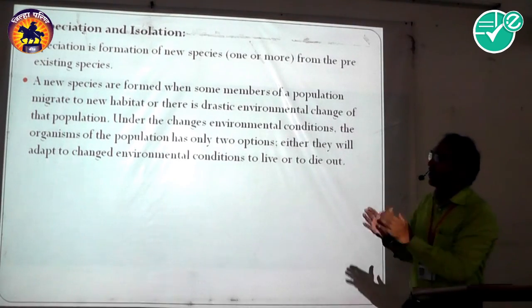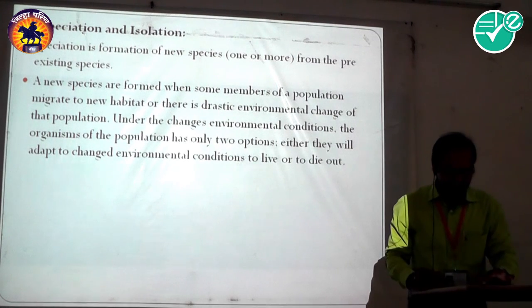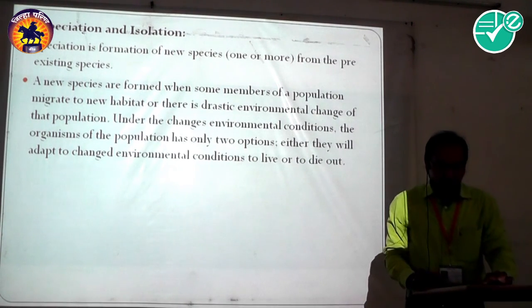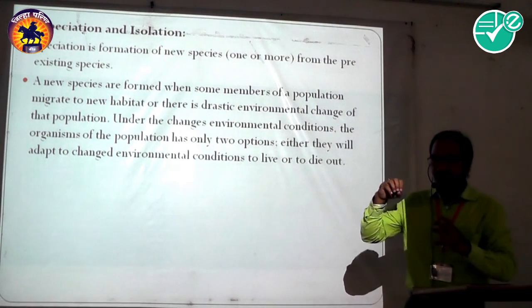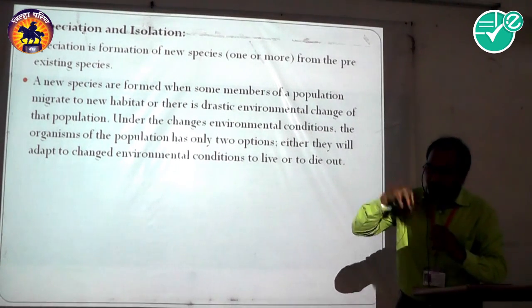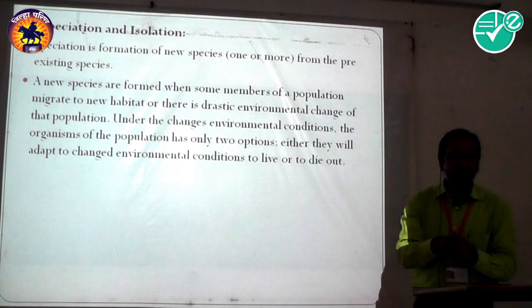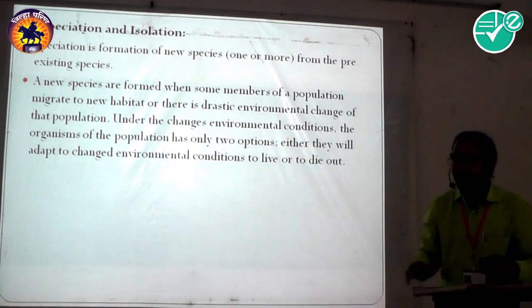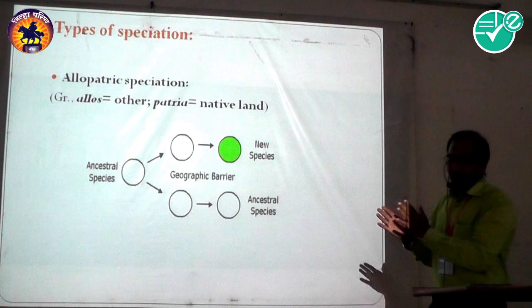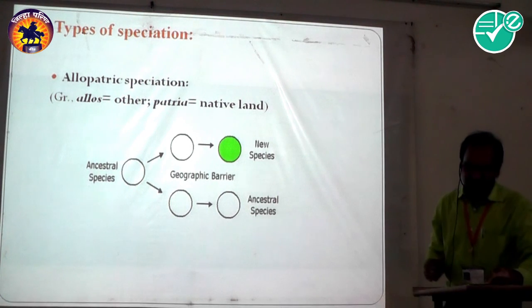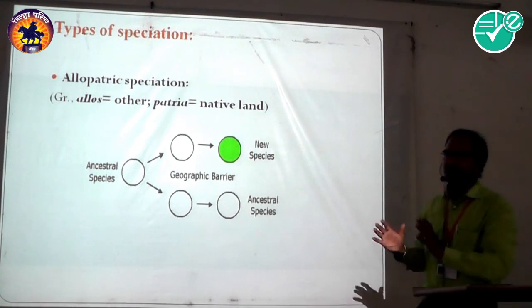Why does this matter? It is the formation of species. Species formation depends upon genetic variation as well as environmental conditions. Speciation is of various types. The types of speciation — how species are formed from a pre-existing population.